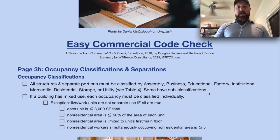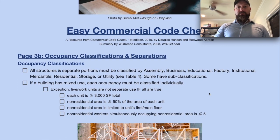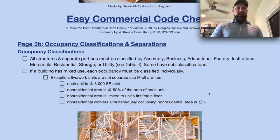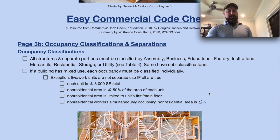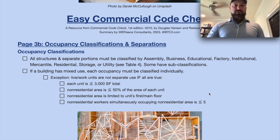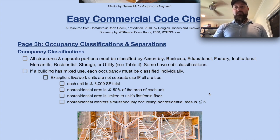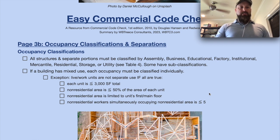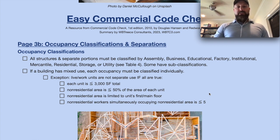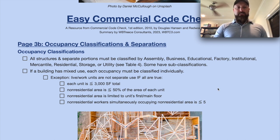3B begins with occupancy classifications and separations. Under occupancy classifications, all structures and separate portions must be classified as assembly, business, educational, factory, institutional, mercantile, residential, storage, or utility. There is a table for that — table 4. Some of those have sub-classifications.